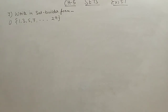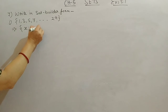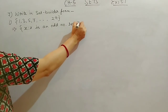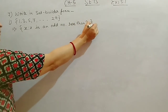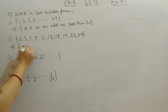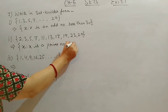Question 7: Write in set builder form. First: {1, 3, 5, 7, ..., 29} — these are odd numbers. Set builder: {X | X is an odd number less than 30}. Second: {2, 3, 5, 7, 11, 13, 17, 19, 23, 29} — these are prime numbers. Set builder: {X | X is a prime number less than 30}. Third: {1, 4, 9, 16, 25} — these are perfect square numbers. Set builder: {X | X is a perfect square number}. No upper limit is given, so no need to write one.